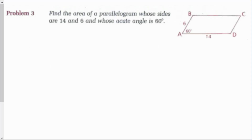Problem 3: find the area of a parallelogram whose sides are 14 and 6 and whose acute angle is 60 degrees. Looking at parallelogram ABCD, I have a base of 14 but no given height, so I need to find my height. Dropping an altitude from vertex B creates a right angle and a 30-60-90 triangle, where AB = 6 is my hypotenuse. So 2x equals 6, meaning x equals 3.